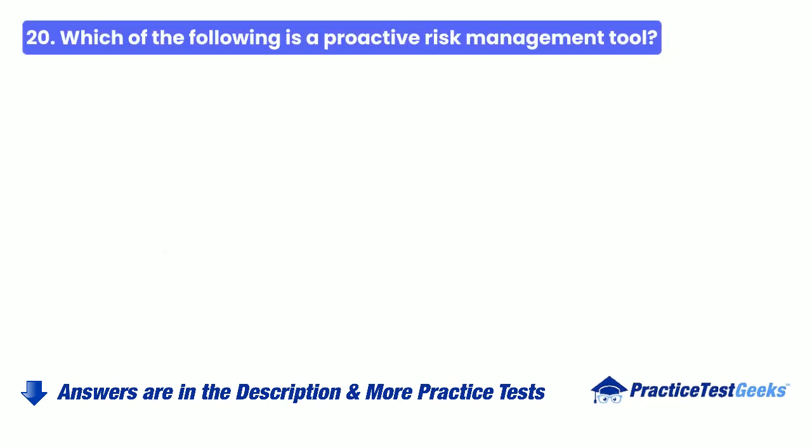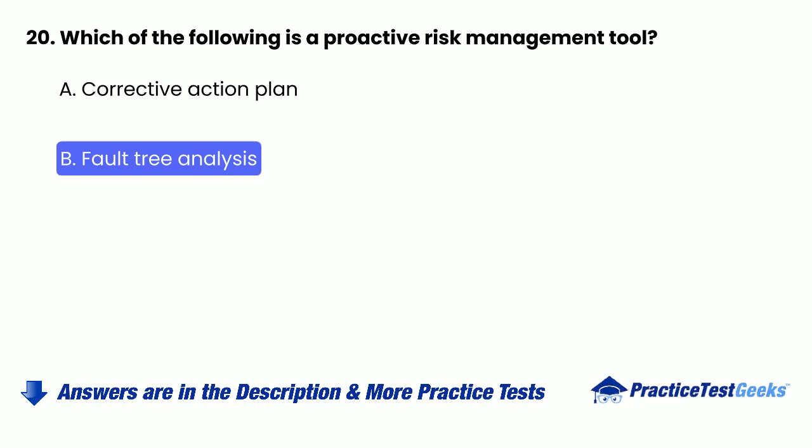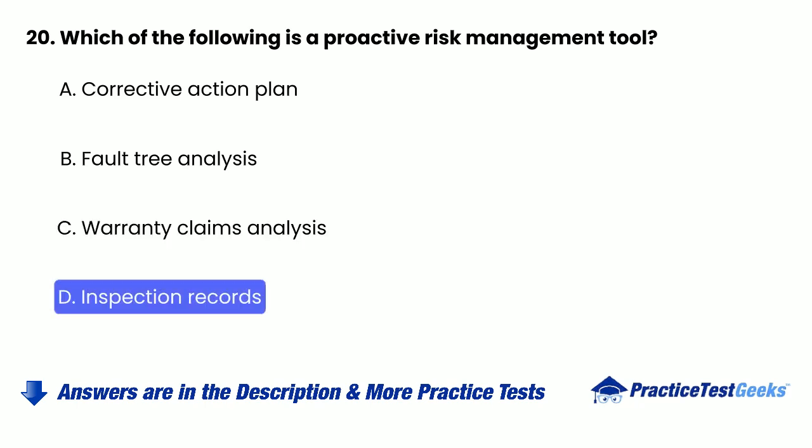20. Which of the following is a proactive risk management tool? a. Corrective action plan. b. Fault tree analysis. c. Warranty claims analysis. d. Inspection records.